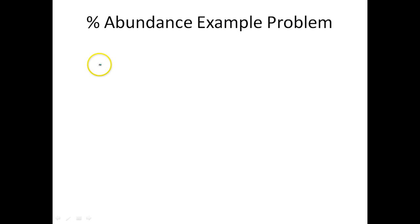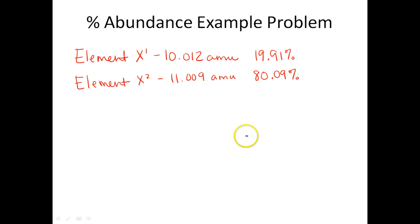Let's do an example. Percent abundance example problem. If we have element X, which has two natural isotopes. Isotope with a mass of 10.012 has an abundance of 19.91%. And then isotope number two has a mass of 11.009 AMU. And its relative abundance is 80.09%. And AMU just stands for, that's the unit for the mass. Just calculate the average atomic mass.